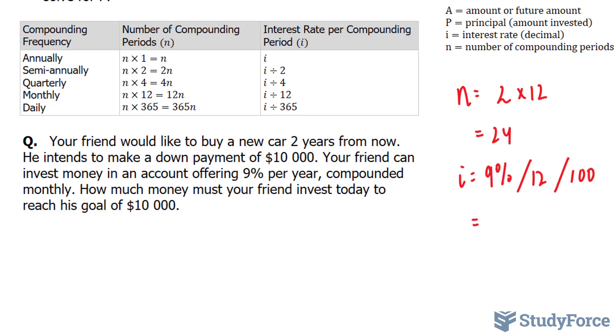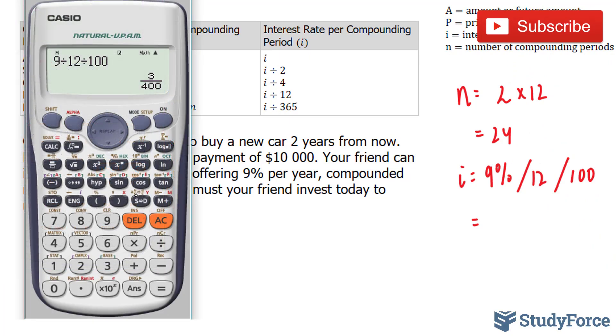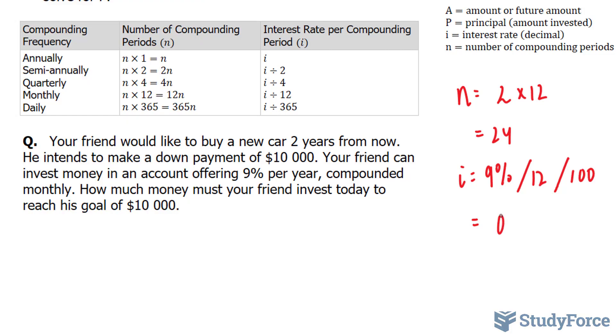Let's use our calculator. 9 divided by 12 divided by 100 gives us 7.5 times 10 to the power of negative 3, which is equal to 0.0075.